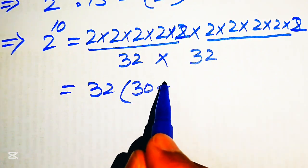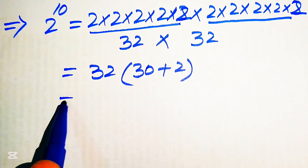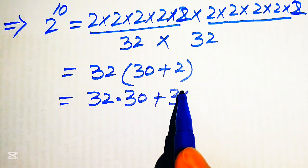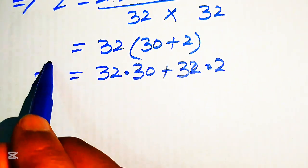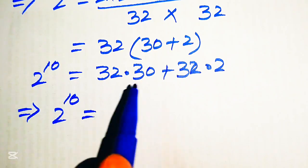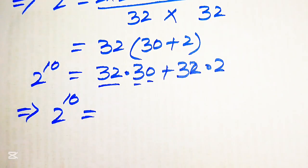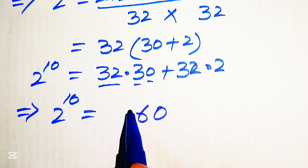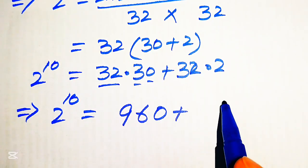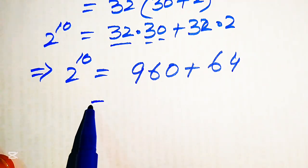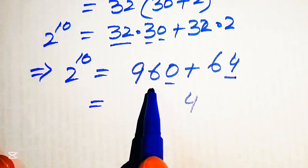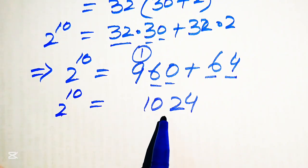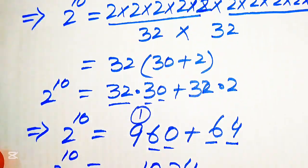We break 32 as 30 plus 2, then multiply both values by 32: 32 multiplied by 30, plus 32 multiplied by 2. Carrying out the multiplication: 3 twos are 6, 3 threes are 9, plus 2 twos are 4 and 2 threes are 6. Adding: 0 plus 4 is 4, 6 plus 6 is 12 — write 2 carry 1, 9 plus 1 is 10. So 2 to the power of 10 equals 1024.